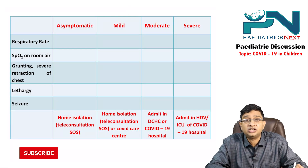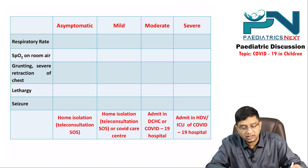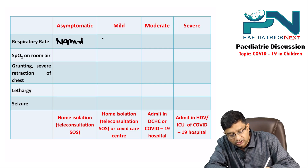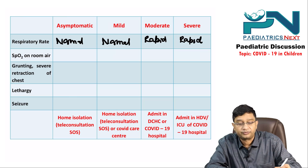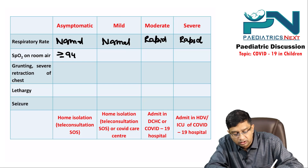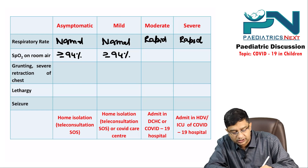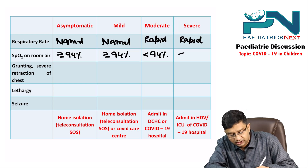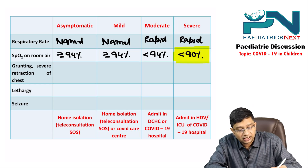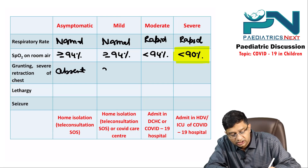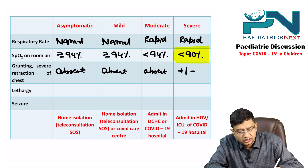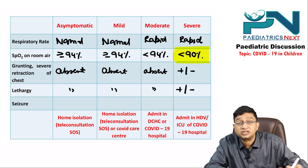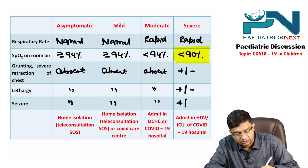Regarding examination criteria: respiratory rate is normal in asymptomatic and mild, and rapid in moderate and severe. SpO2 on room air is ≥94% in asymptomatic and mild, less than 94% in moderate, and less than 90% in severe. Grunting and severe chest retraction are absent in asymptomatic and mild, and may or may not be present in moderate and severe. Similarly, lethargy and seizures are absent or variable in moderate and severe.